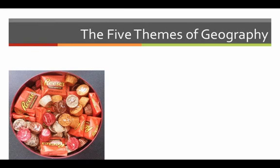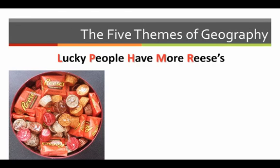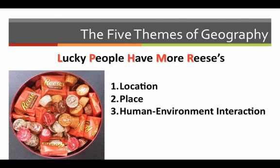An easy mnemonic to help remember the five themes of geography is: lucky people have more races. The five themes are location, place, human environment interaction, movement, and region.